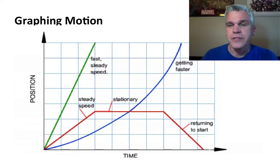So here's an example of a position time graph, and if you take a look at that green line versus the blue line versus the red line, there's different types of motions taking place here.